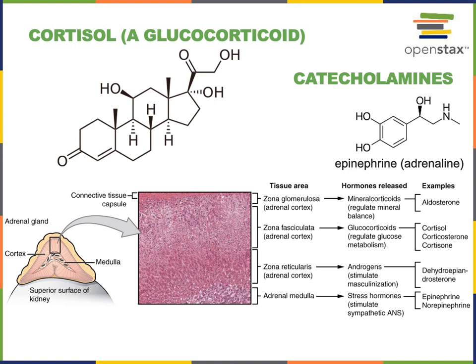ACTH binds to receptors on the surface of cells in the zona fasciculata, the middle layer of the three layers of the adrenal cortex. These cells in the zona fasciculata synthesize cortisol, which then travels throughout the blood binding to glucocorticoid receptors in cells all throughout the body. Cortisol helps produce a long-term resistance phase response to stress, and one of its major effects is increasing blood glucose levels — hence the name glucocorticoid.